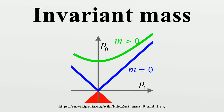The invariant mass, rest mass, intrinsic mass, proper mass, or in the case of bound systems simply mass, is a characteristic of the total energy and momentum of an object or a system of objects that is the same in all frames of reference related by Lorentz transformations.